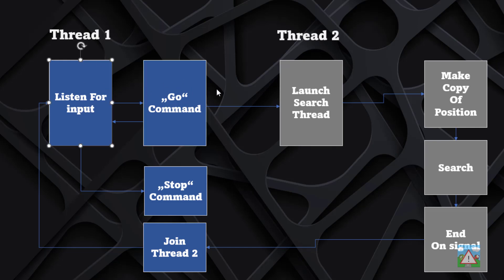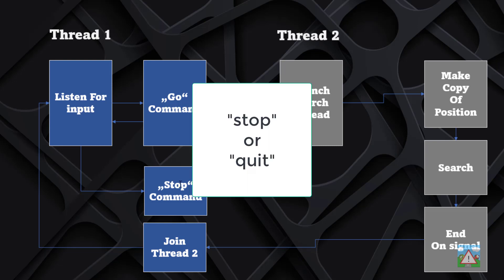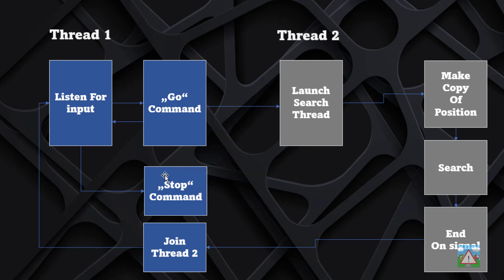In the search thread, we won't need any polling for input, which makes things a lot cleaner to manage. According to the UCI protocol, when the engine is thinking, either stop or quit will be sent. If stop is sent, we set the search info to stop and immediately wait to join thread2 — blocking for a very short time until thread2 sees the flag and exits the search, then we go back to listening for input.